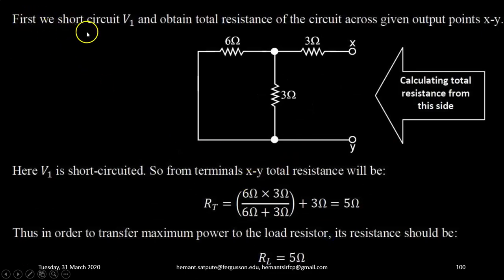First, we short the voltage source V1 to obtain total resistance of the circuit across the given points. So, step one, calculate the total resistance from the output side. Shorting the input voltage source V1, the circuit will look like this.